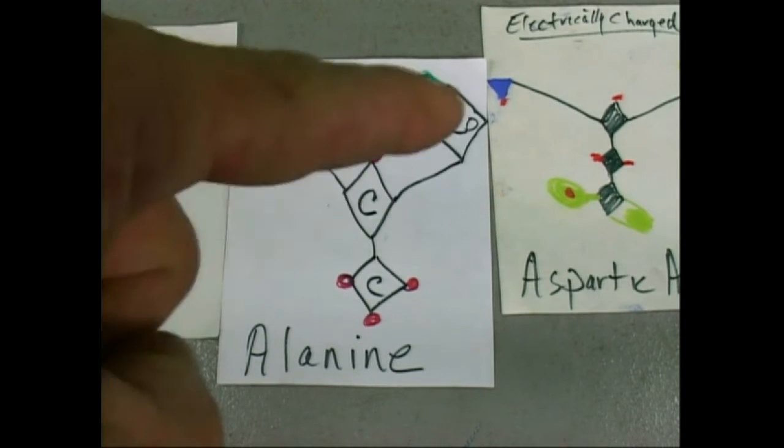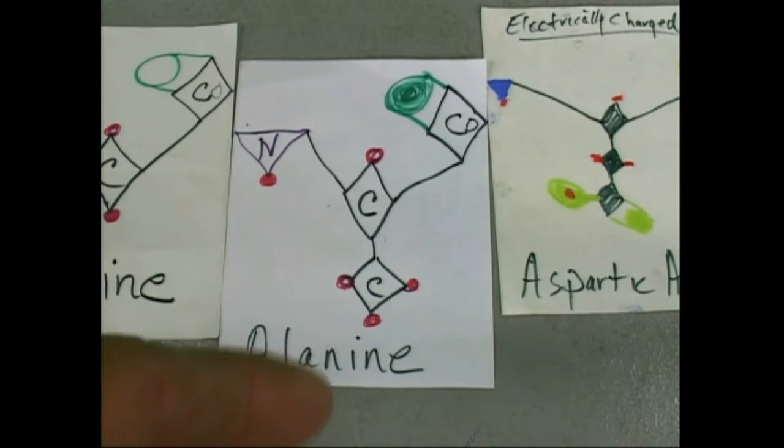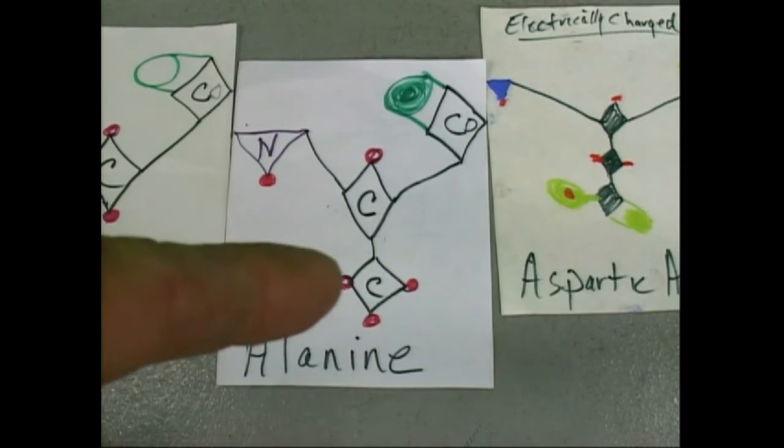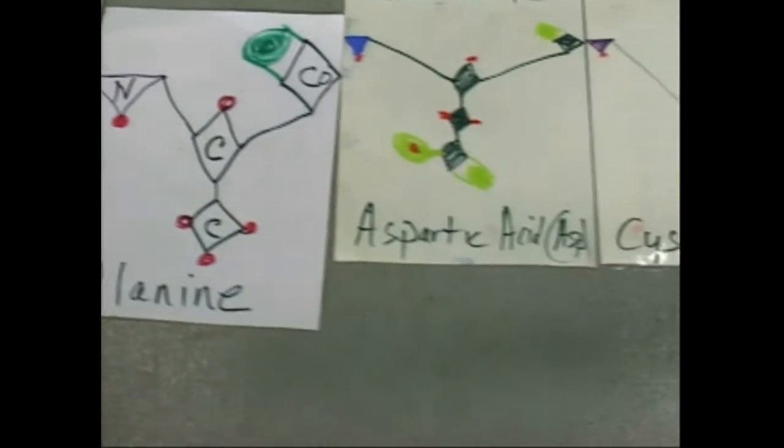The backbone now, we don't have to be concerned with, because we're experts at doing those now. Triangle, diamond, diamond, circle, methyl. See? Three dots around it.